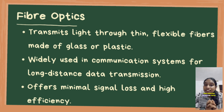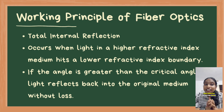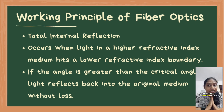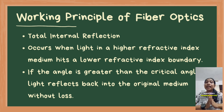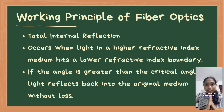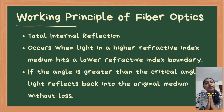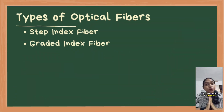This process relies on total internal reflection, where light is reflected within the core of the fiber, which has a higher refractive index than the surrounding cladding. There are two main types of optical fibers.